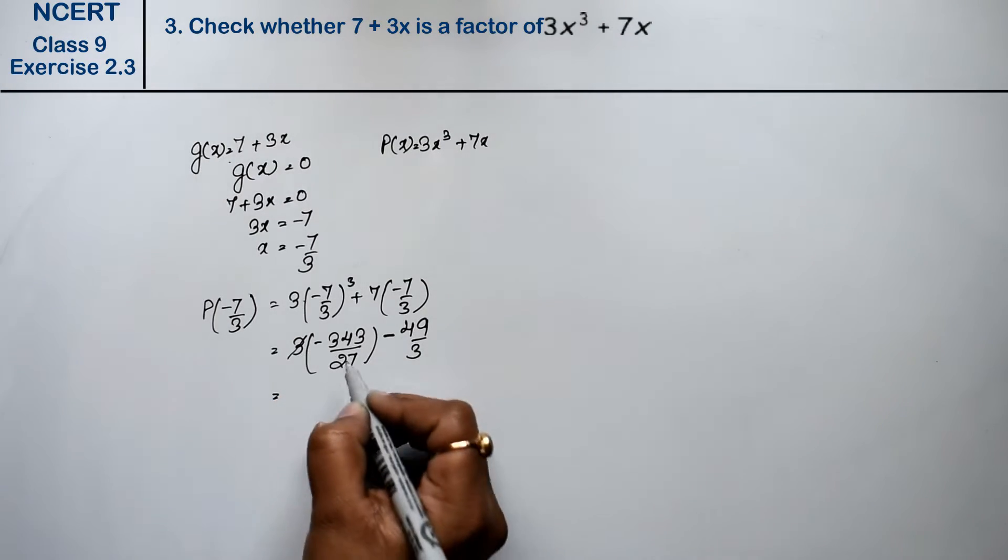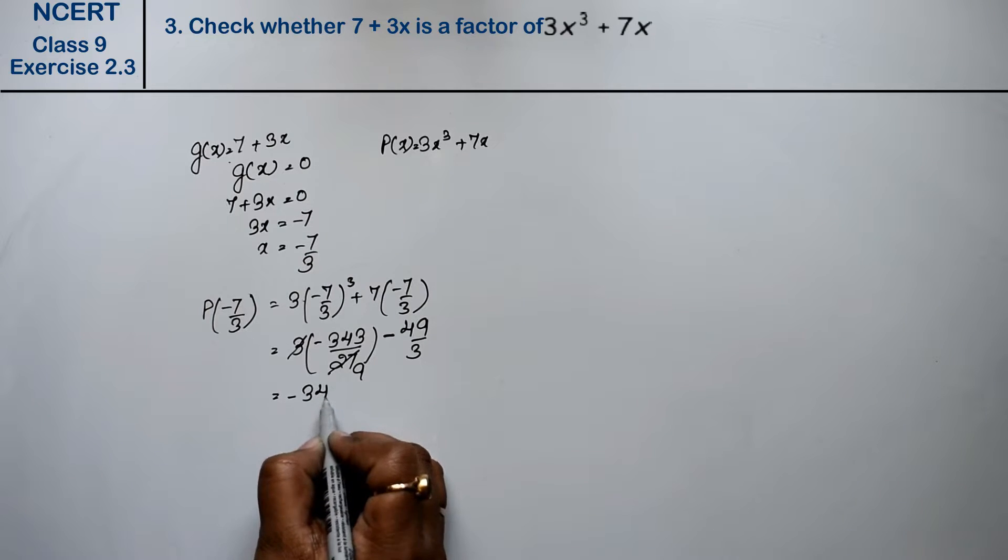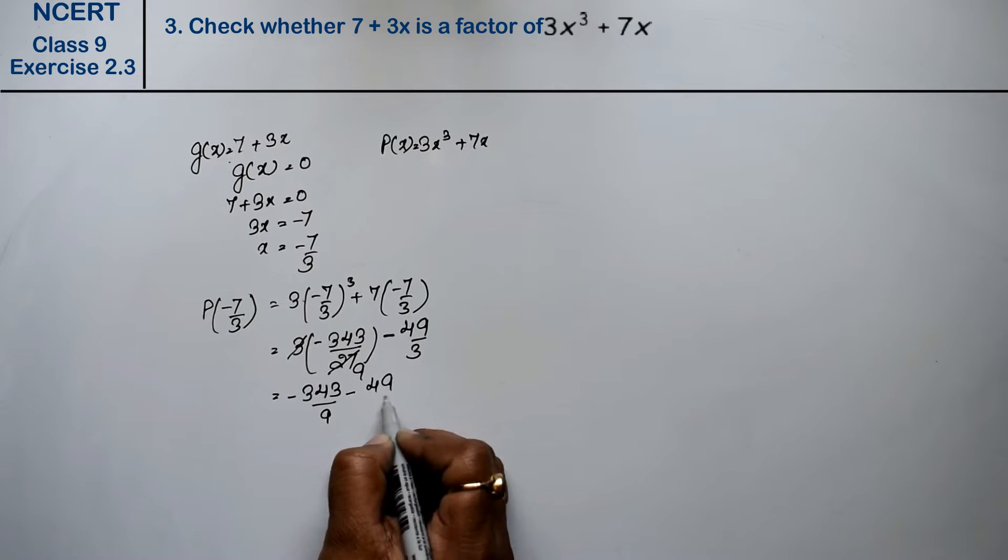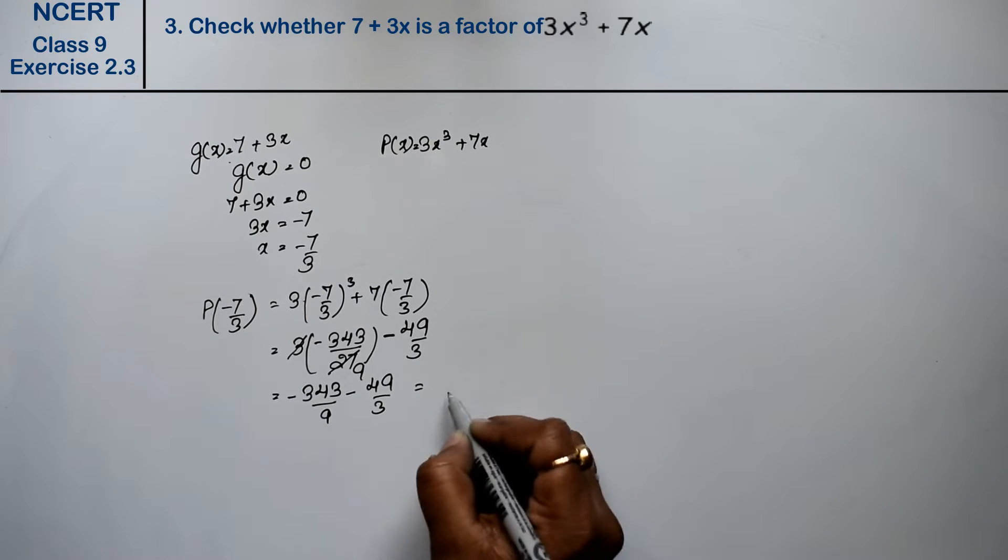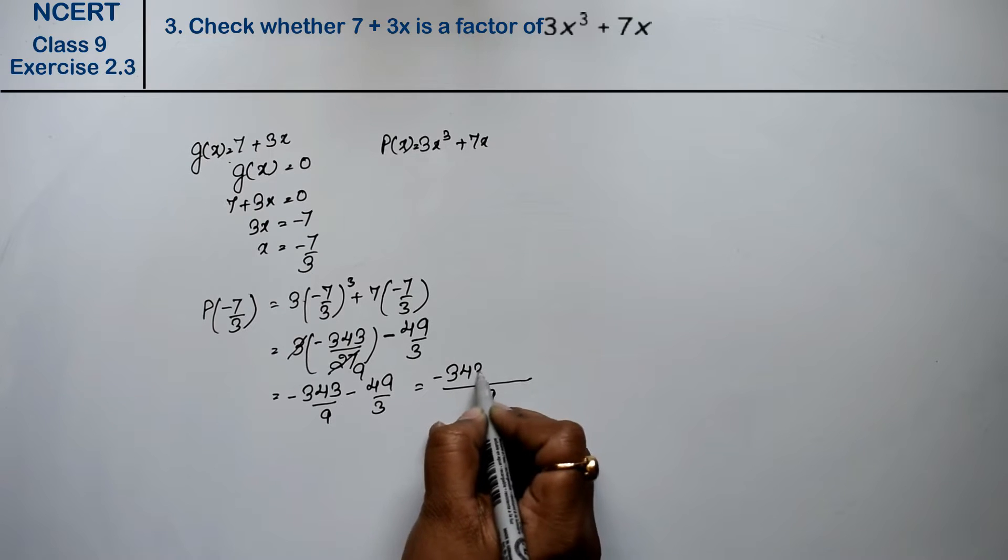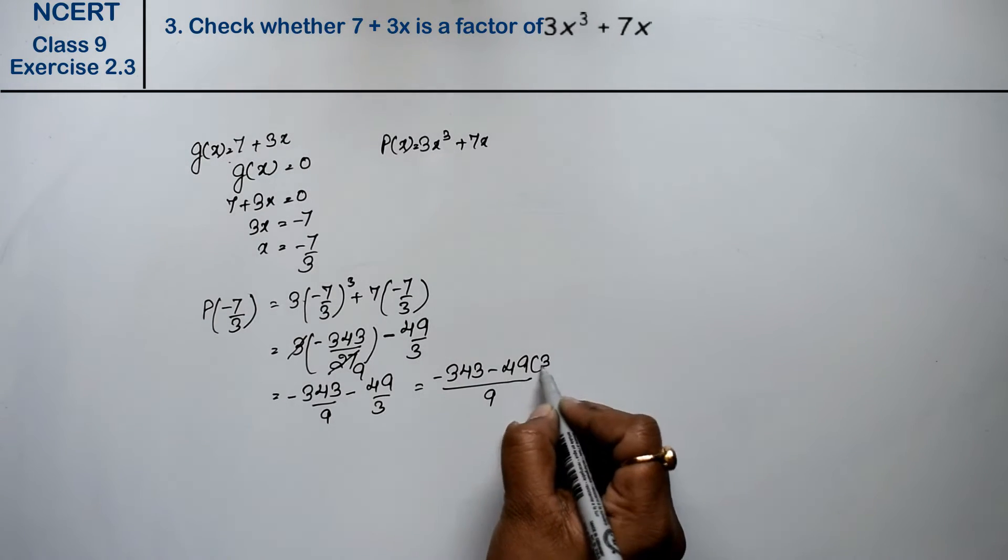So what did we get? 3 ones are 3, 3 nines are 27. So this becomes minus 343 upon 9 minus 49 upon 3. LCM is 9. So this becomes minus 343 minus 49 into 3, 3 threes are 9.